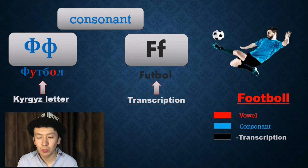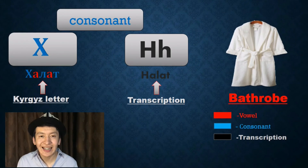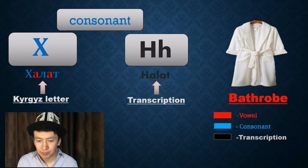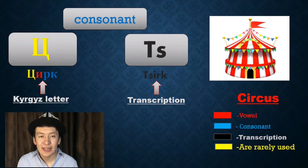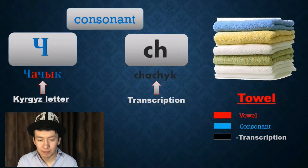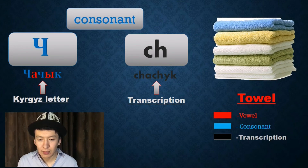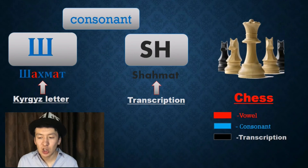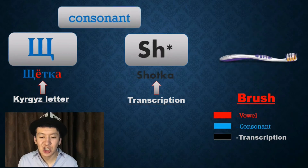Football. Ф — Halat, Bathrobe. Ц — Sirk, Circus. Ч — Chi, Towel. Ш — Shi, Shahmat, Chess. Щ — for example, Щotka, Brush.